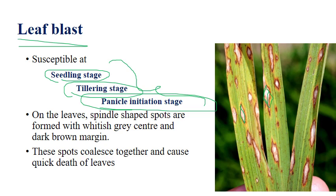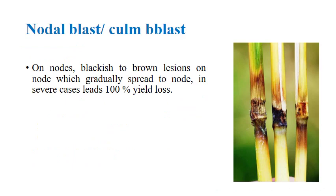Leaf blast shows spindle-shaped spots with pointed ends, a grayish-white center, and dark brown margins. In later stages, these spots coalesce — meaning they come together to form larger necrotic areas — and in severe cases the leaf will die completely.